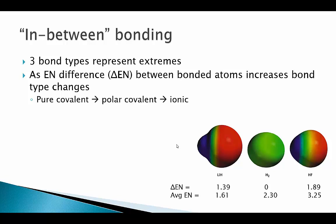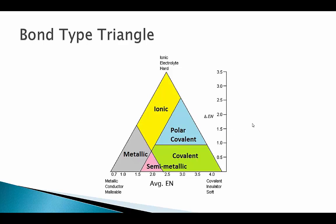This lets us think about bonding as three extremes, and the way to represent three extremes rather than on a line is with a triangle — what we call the bond-type triangle. The y-axis is the difference in electronegativity (delta electronegativity). When there are big electronegativity differences between two bonded atoms, we're at the ionic bonding corner. As we move more toward this corner of the bond-type triangle, bonding will appear more and more ionic in character. This other corner has a really small electronegativity difference.